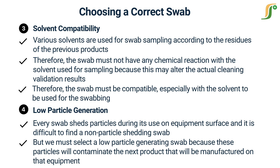All the above features should be considered before selecting the swab for cleaning validation sampling. You may add more things to this list, like the size of the swab. The swab must be sufficient in size to cover the sampling area by 5 to 10 swabbings. A bigger swab will be able to hold more material from the sampling surface. A swab plays an important role in successful cleaning validation.